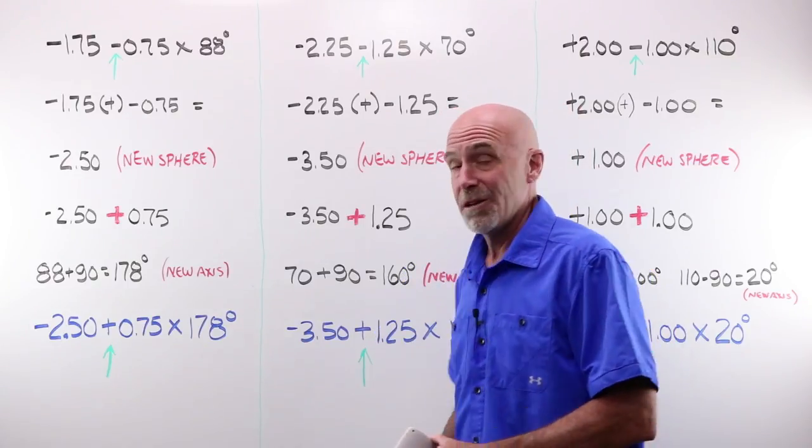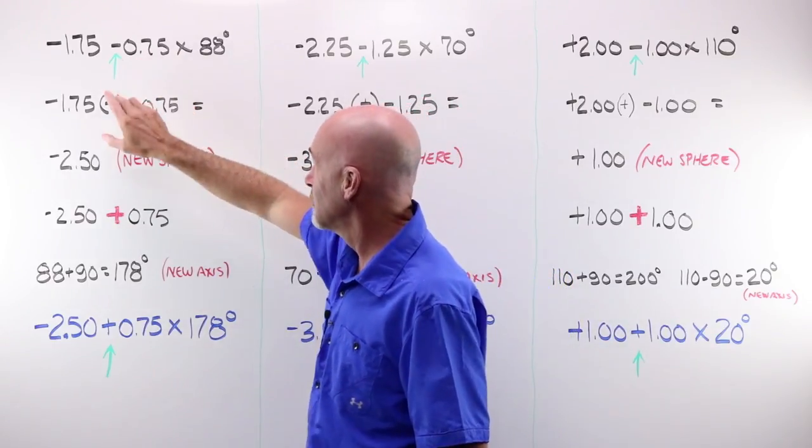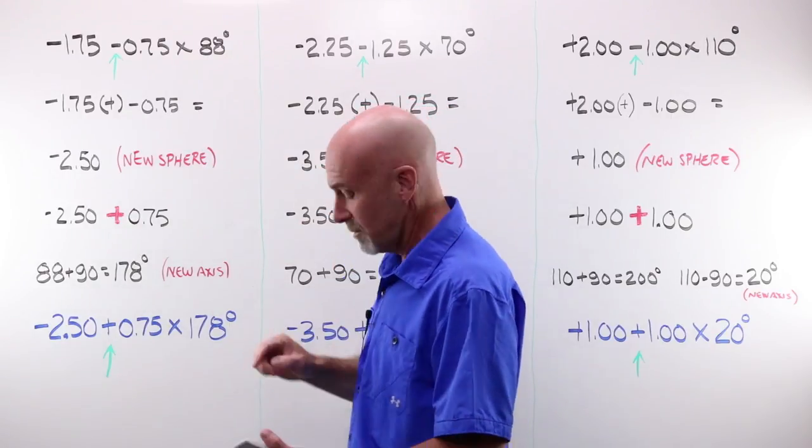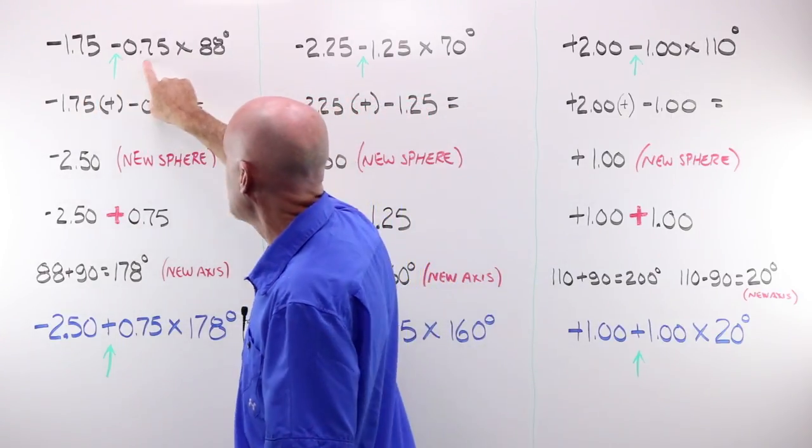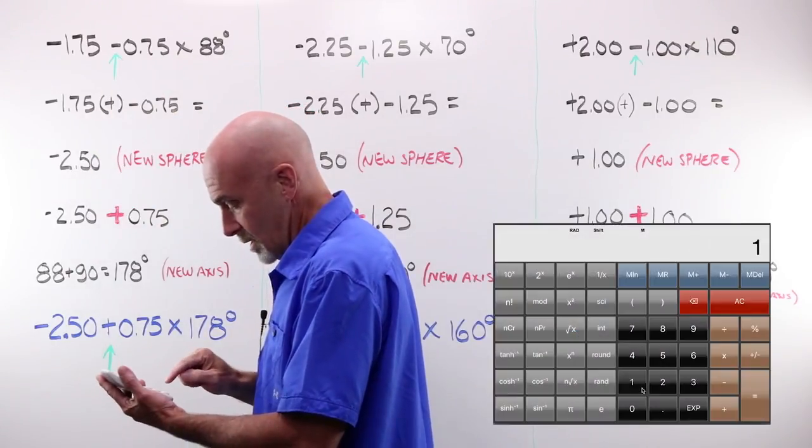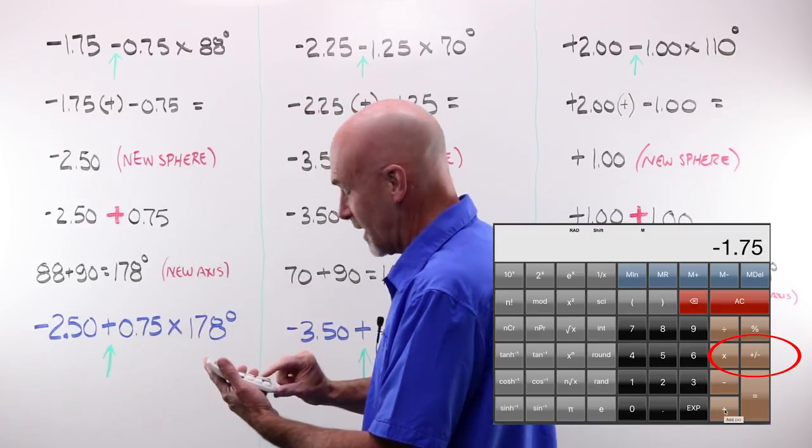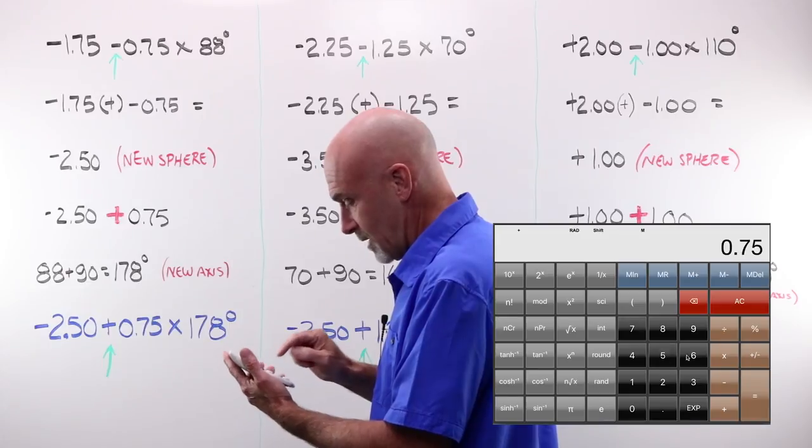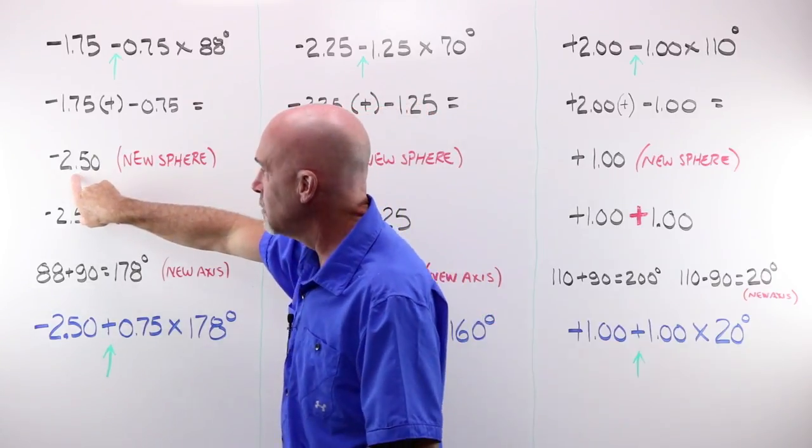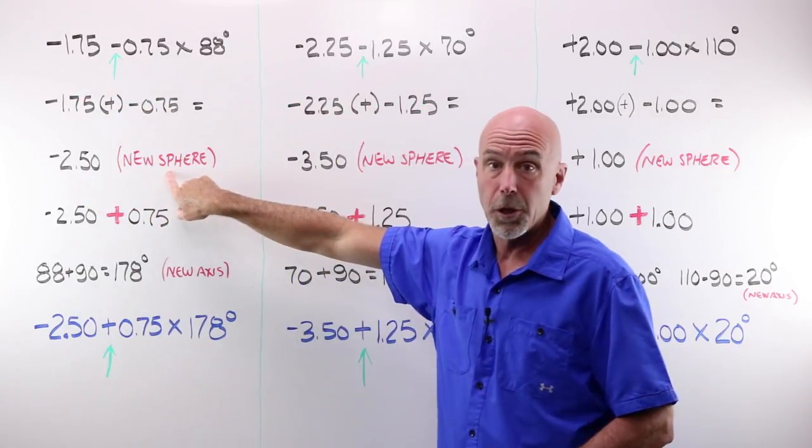You're going to create a set of garbage lenses. Have a very unhappy customer and a very unhappy employer. Remember, to convert a minus cylinder form to a plus cylinder form, we're going to follow the rules. We're going to take our sphere and add it to our cylinder. Negative 1.75, using a calculator with the plus minus sign, plus 0.75 minus, gives me a minus 2.50. This plus this is this. That is my new sphere power.